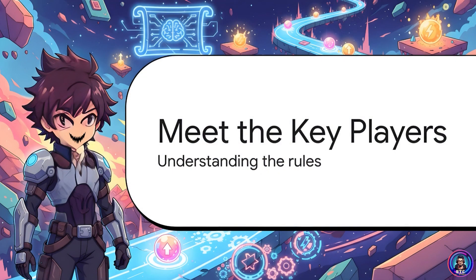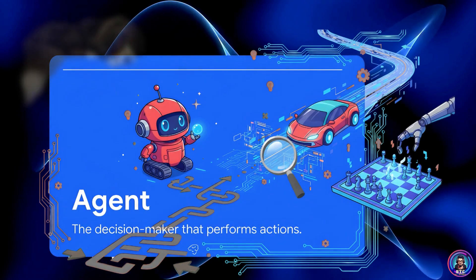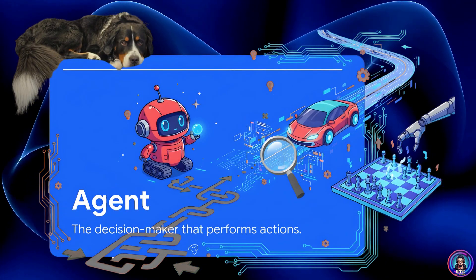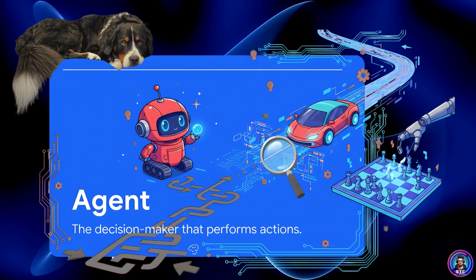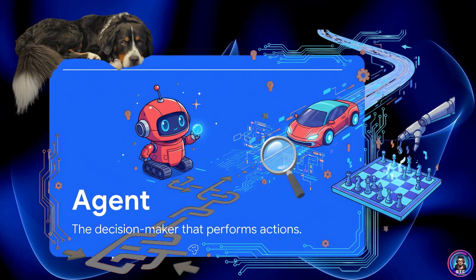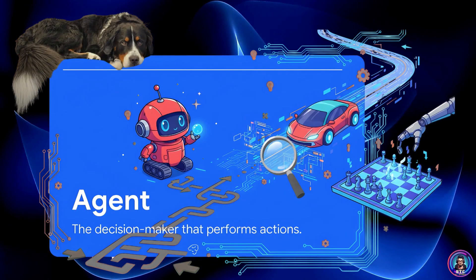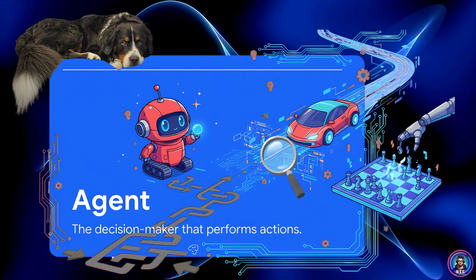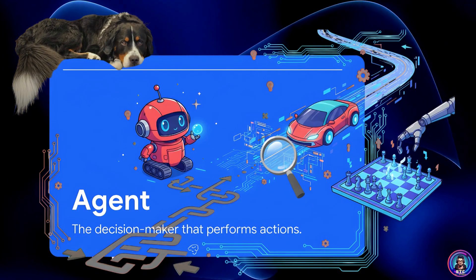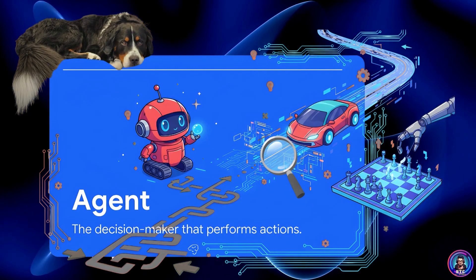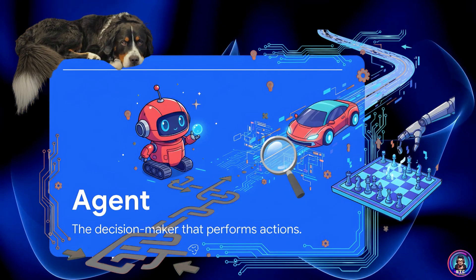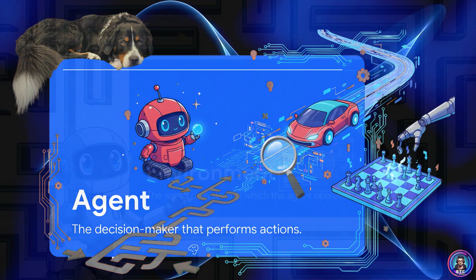Before our hero can start its journey, we've got to meet the key players and understand the basic rules of the game it's playing. First up, we have the agent — this is our learner, the one calling the shots. In our story it's this little robot, but in the real world an agent could be anything: a self-driving car, a dog, an algorithm playing chess.